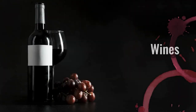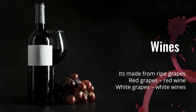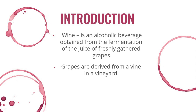First topic: wines — the definition of wines. Wine is made from ripe grapes, which can be red grapes or white grapes. The red grapes make red wine; when making red wine, you include the skin to give it a dark red color. White grapes make white wine, and for white wine the skin is removed — only the white fruit inside the grape is used. Wine is an alcoholic beverage obtained from the fermentation of juice of freshly gathered grapes. Grapes are derived from a vine in a vineyard.